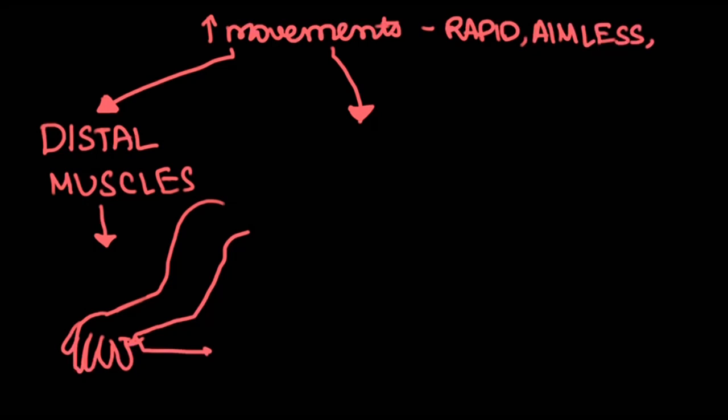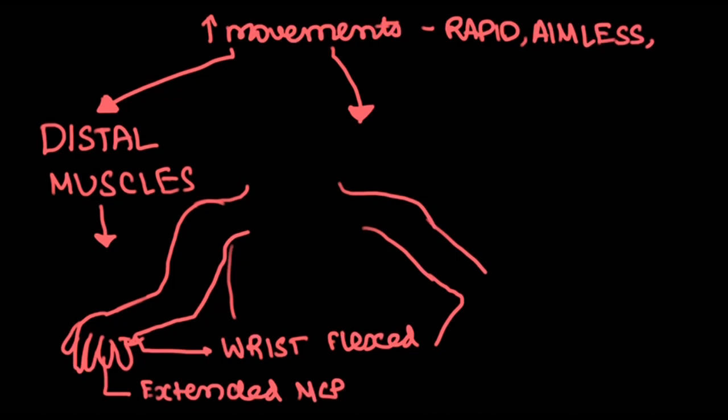choreic hand. Next, when you ask the patient to lift their forearm above the head, the forearm will go into pronation by itself. This is the pronator sign, due to overstimulation of pronator muscles.